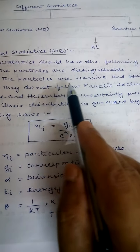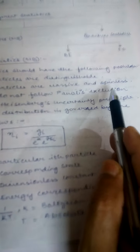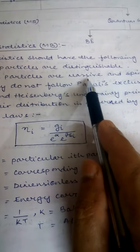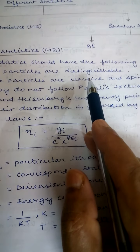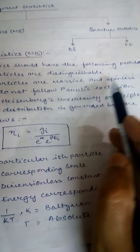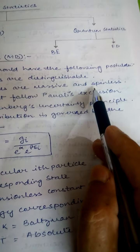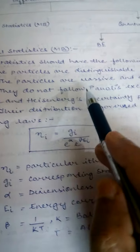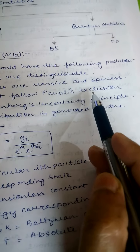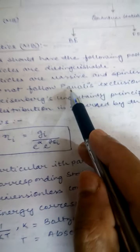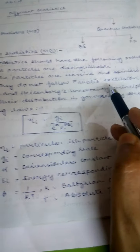The second postulate is that the particles are massive and spinless. Massive means they have significant mass — highly massive macro particles like chalk, duster, etc. Spinless means there is no spin angular momentum of the particles. Third, they do not follow Pauli's exclusion principle — you know from 12th standard that no two electrons can have the same quantum state.